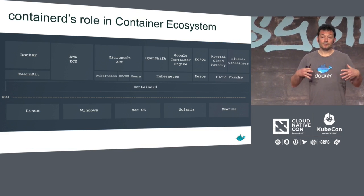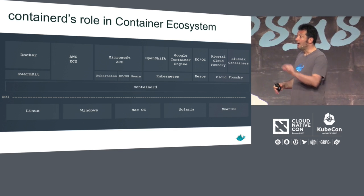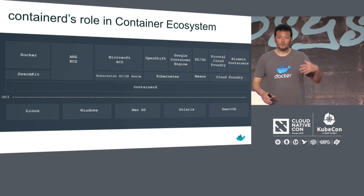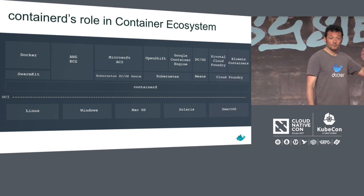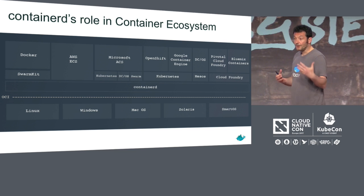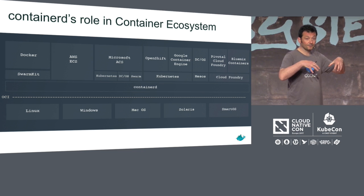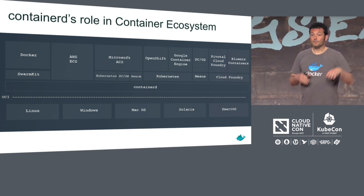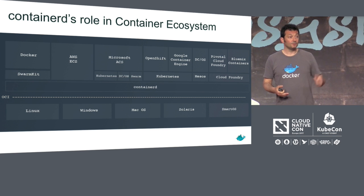The role of Containerd in the container ecosystem: at the base layer you have your operating system. On top of it, you have a thin layer of standards — that's what we call OCI, the Open Container Initiative, another Linux Foundation collaborative project. Docker is part of it with 40 different vendors, and we're defining specs for image and runtime. The specs are very advanced, and there will be a panel session about that this afternoon.